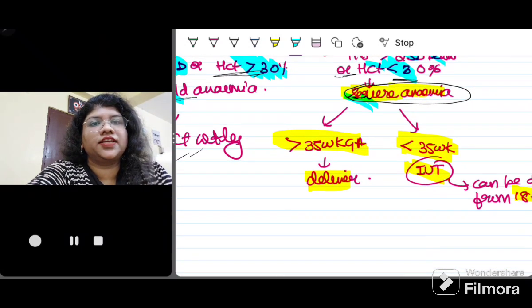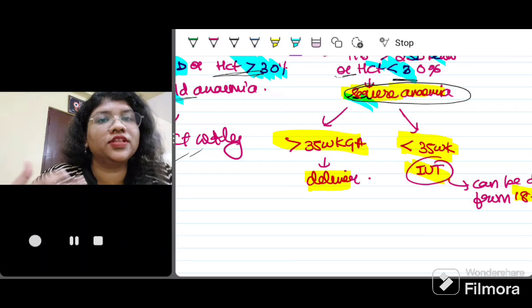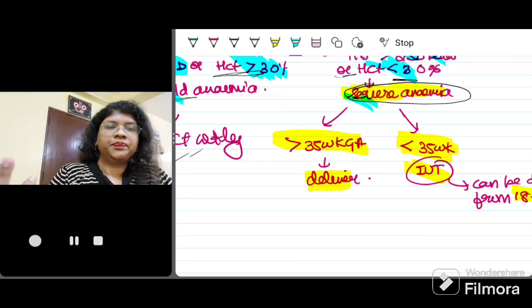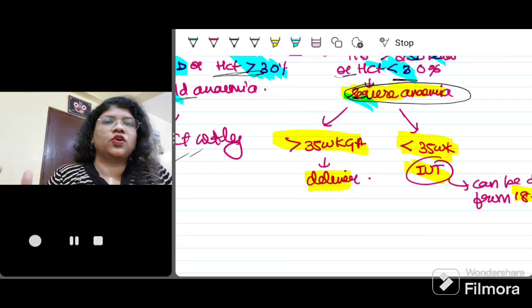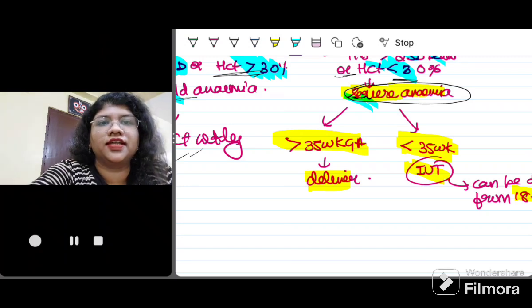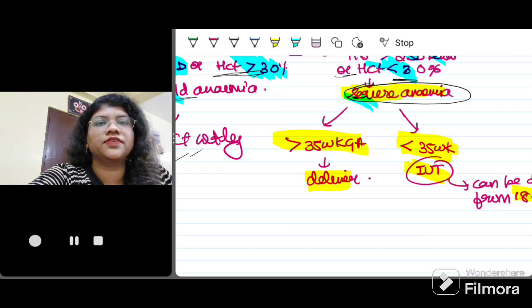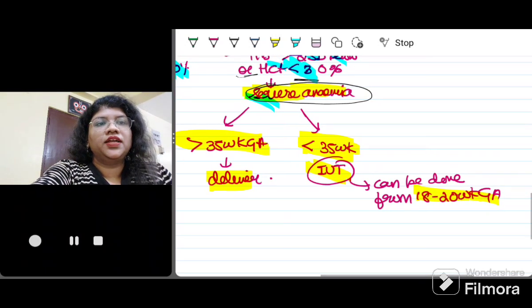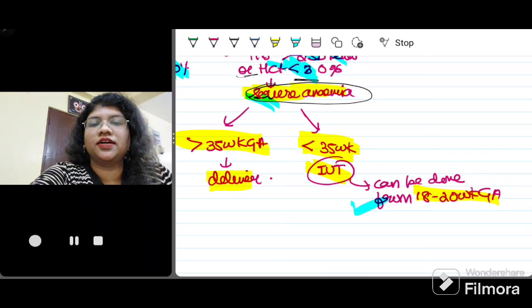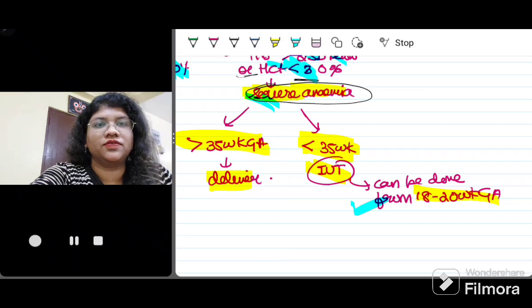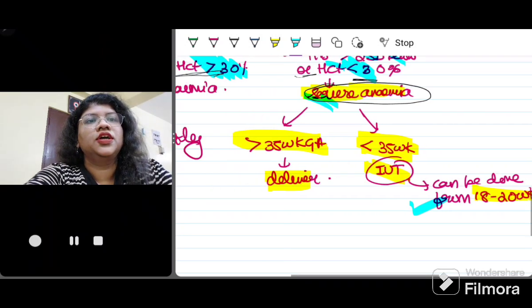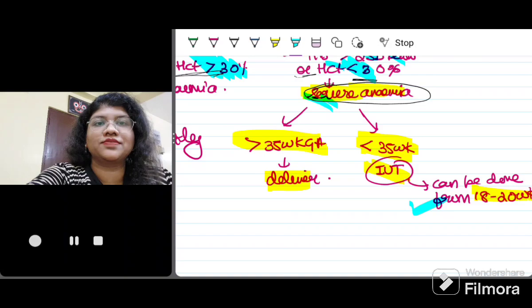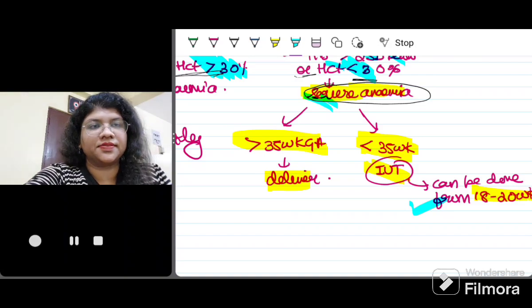Remember that if there is mild anemia, I have to repeat it every weekly checking her hemoglobin and hematocrit status of the fetus and I have to deliver at 37 to 38 weeks. If there is severe anemia and the gestational age is more than 35 weeks I can deliver. Of course by giving corticosteroid coverage I can deliver the fetus. Now suppose the fetus is less than 35 weeks, I am going to do an intrauterine transfusion. Intrauterine transfusion can be done from 18 to 20 weeks of gestational age. Remember in intrauterine transfusion we use packed RBCs.